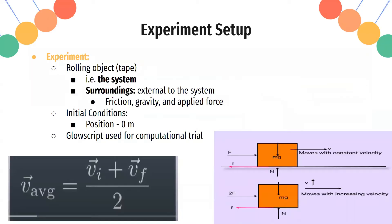So the setup of the experiment is that we'll have a rolling object, such as tape, which I show here, and that'll count as a system. And we'll also have surroundings - anything external to the system. So friction, gravity, any other external forces, applied force at the beginning, all that will go into the surroundings. And wherever the tape starts, that'll be counted as position zero. So the initial condition of the position of the tape is zero meters.